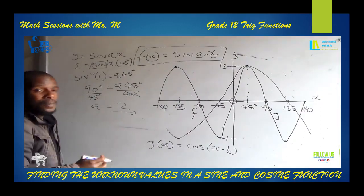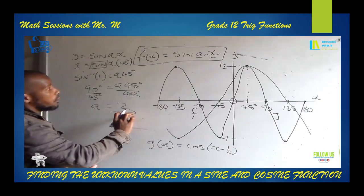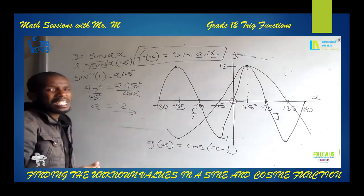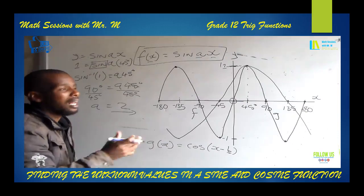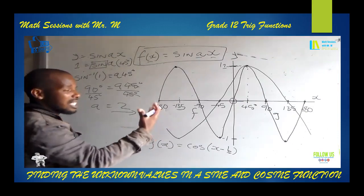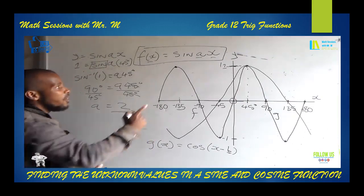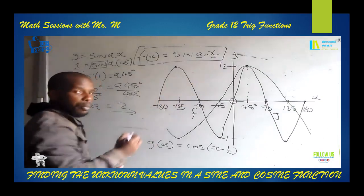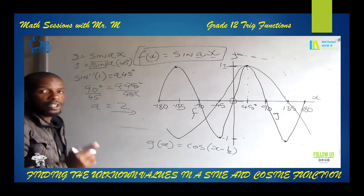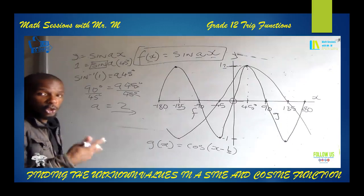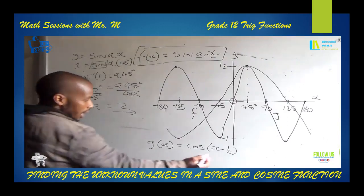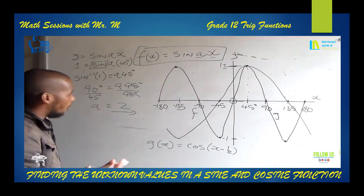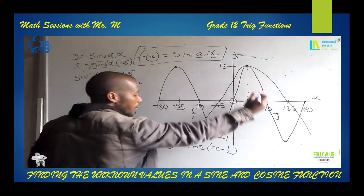So with A as the coefficient on the sine graph, you can verify using the natural period: the natural period of the sine graph is 360 degrees. Divide by A which is 2, because A affects the period of the sine graph, and you get 180 degrees as the new period.